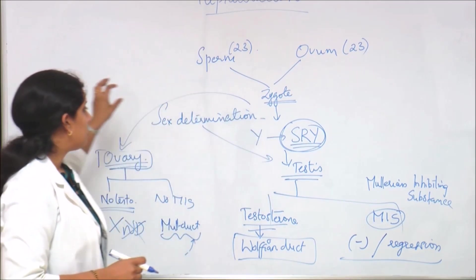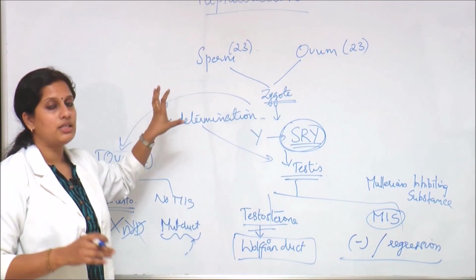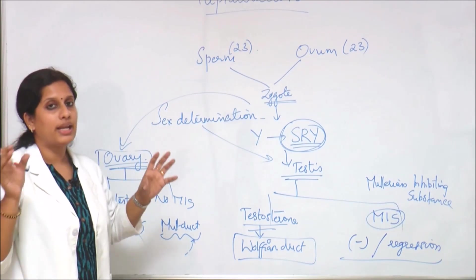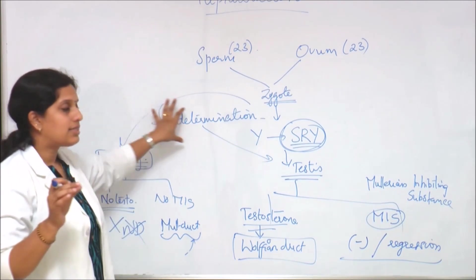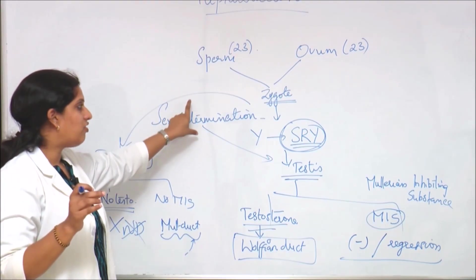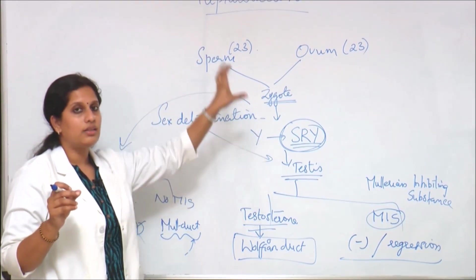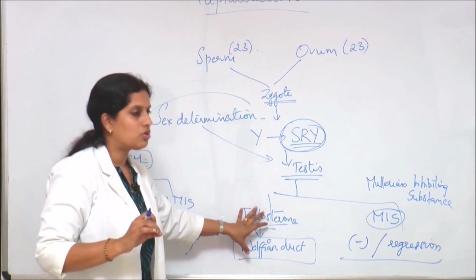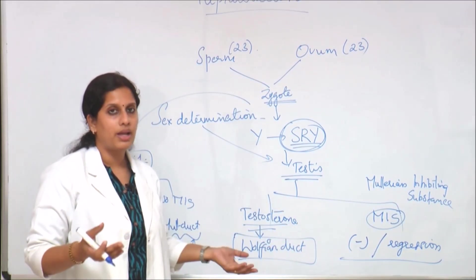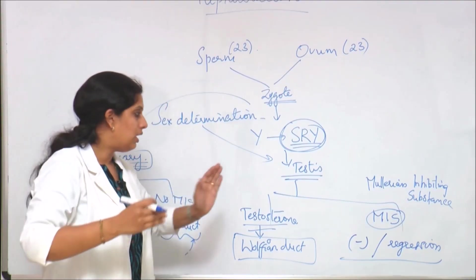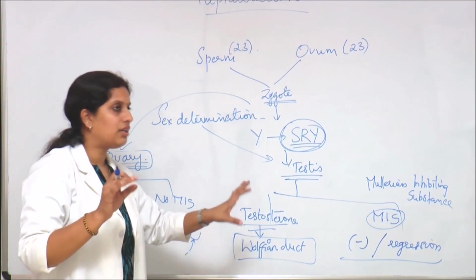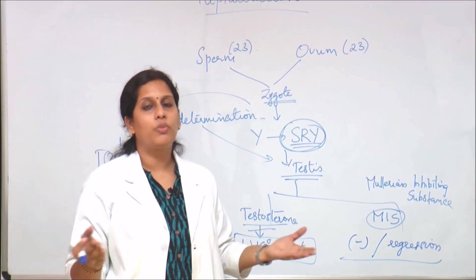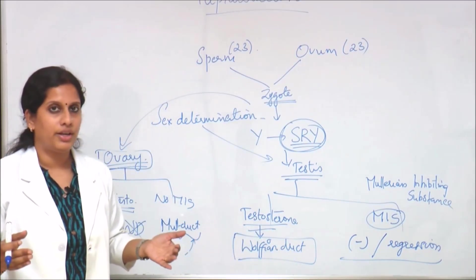In summary, the Y chromosome and X chromosome determine the sex of the baby. If the Y chromosome is present, the developing gonad becomes a testis, and testosterone along with MIS promotes Wolffian duct development. If there is no testosterone and no MIS, then there will be development and proliferation of the Mullerian duct, forming female reproductive structures.